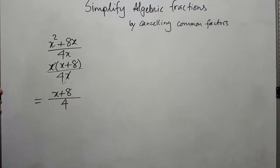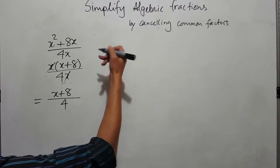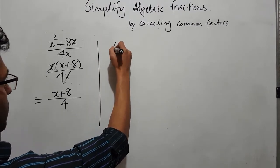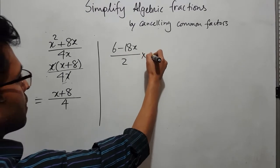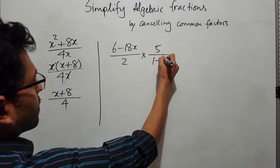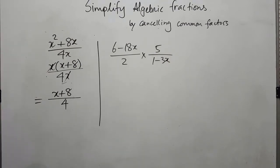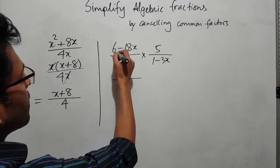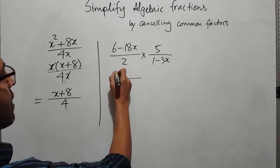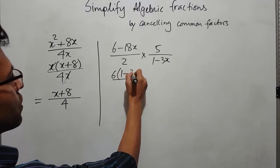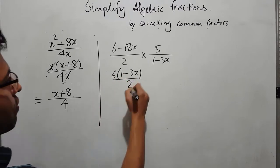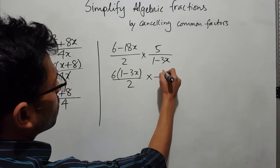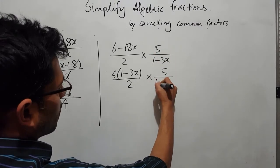Now look at another example: (6 minus 18x) over 2, multiplied by 5 times (1 minus 3x). In the numerator, 6 and 18x share a common factor of 6. If you take 6 as the common factor, you get 6 times (1 minus 3x), since 6 times 1 is 6 and 6 times 3x is 18x.